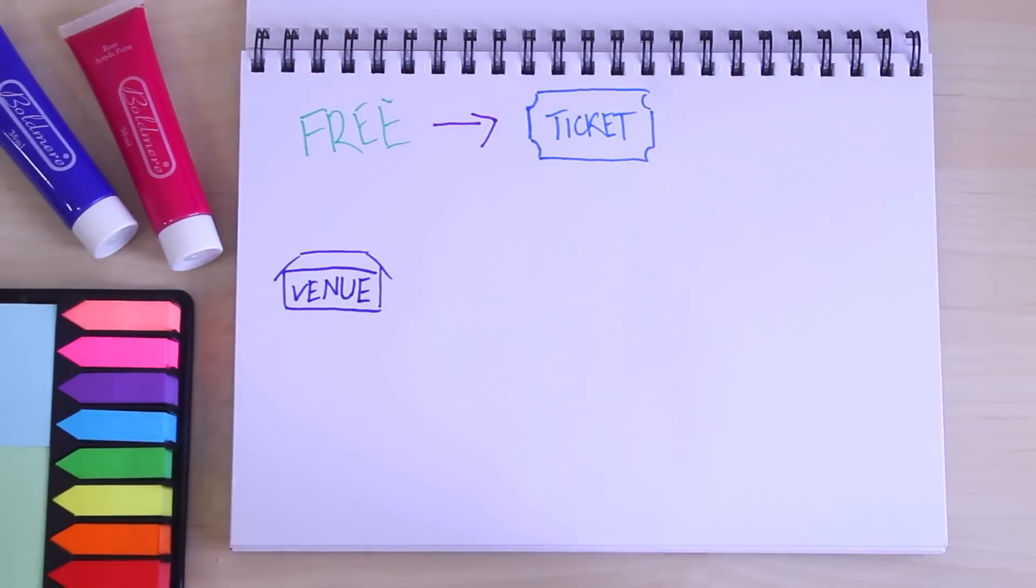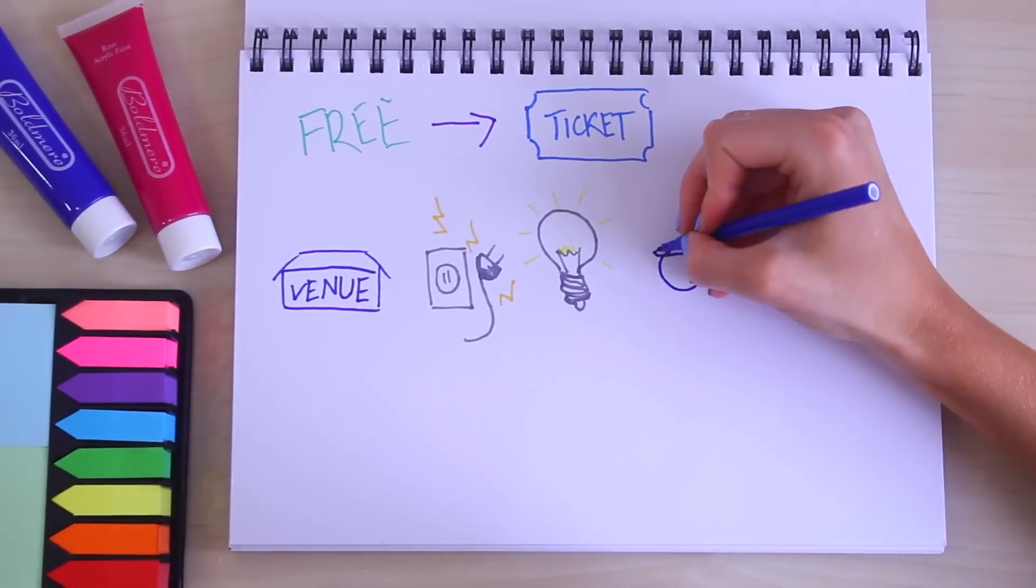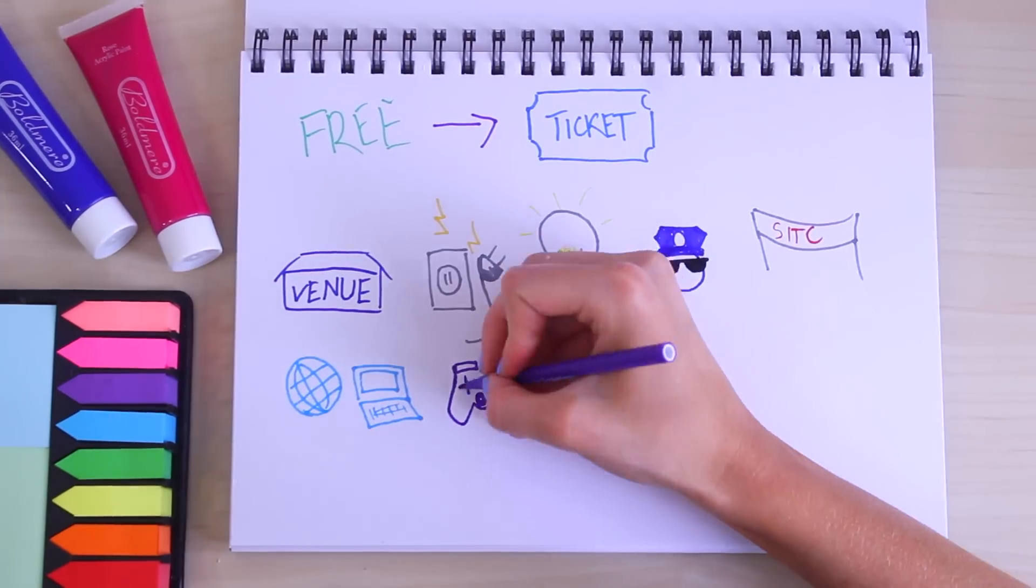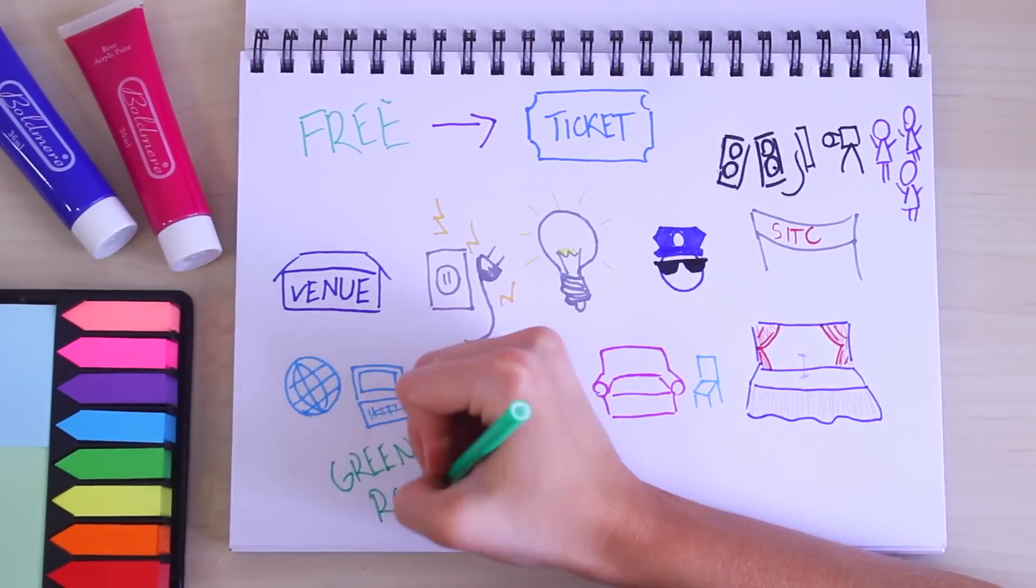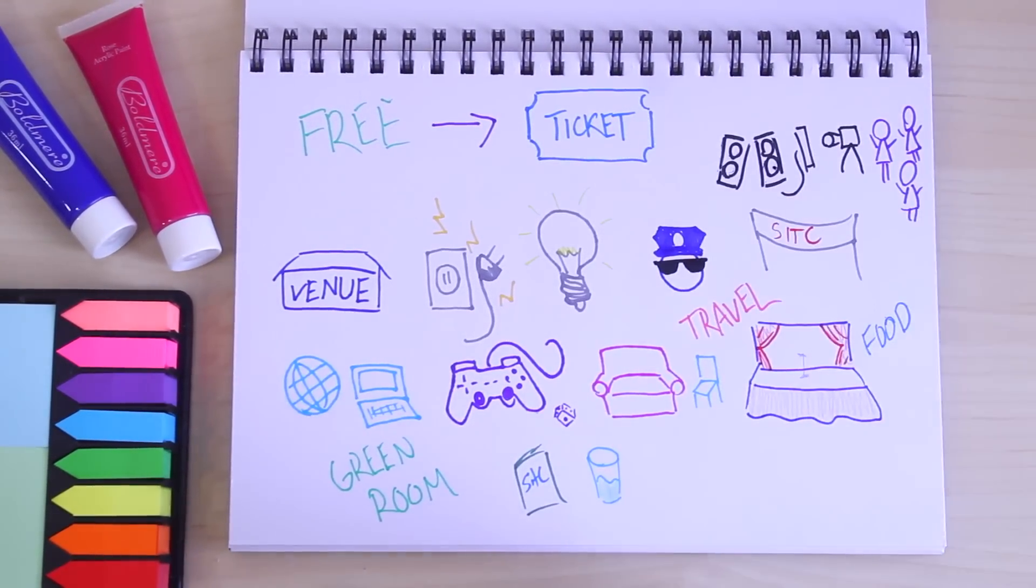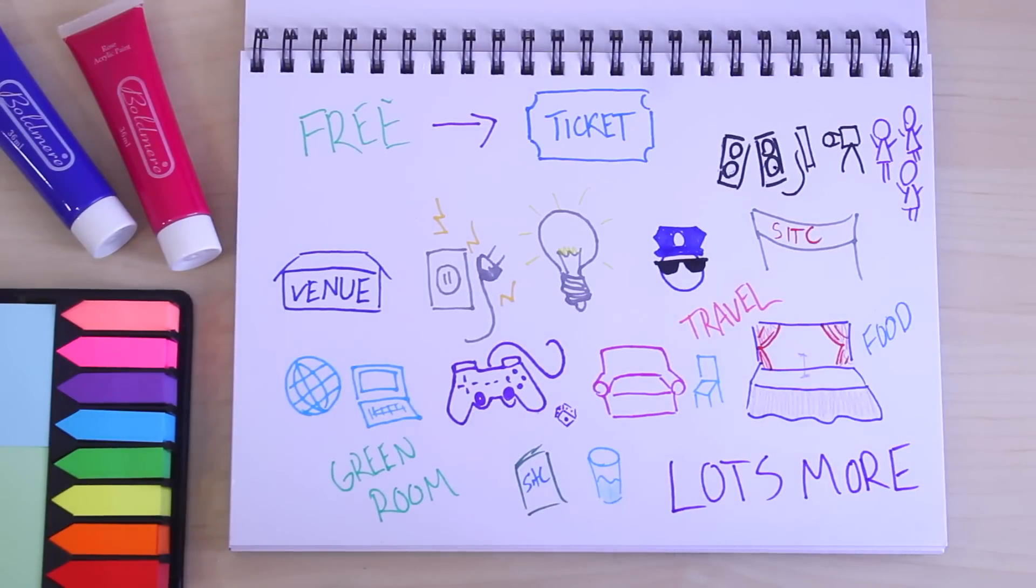This allowed Tom to pay for the venue, electricity, lighting, security, banners, internet, games, furniture, stage production, production crew, pamphlets, water, green room, travel, food, and just lots more. So much goes into this event, you guys have no idea.